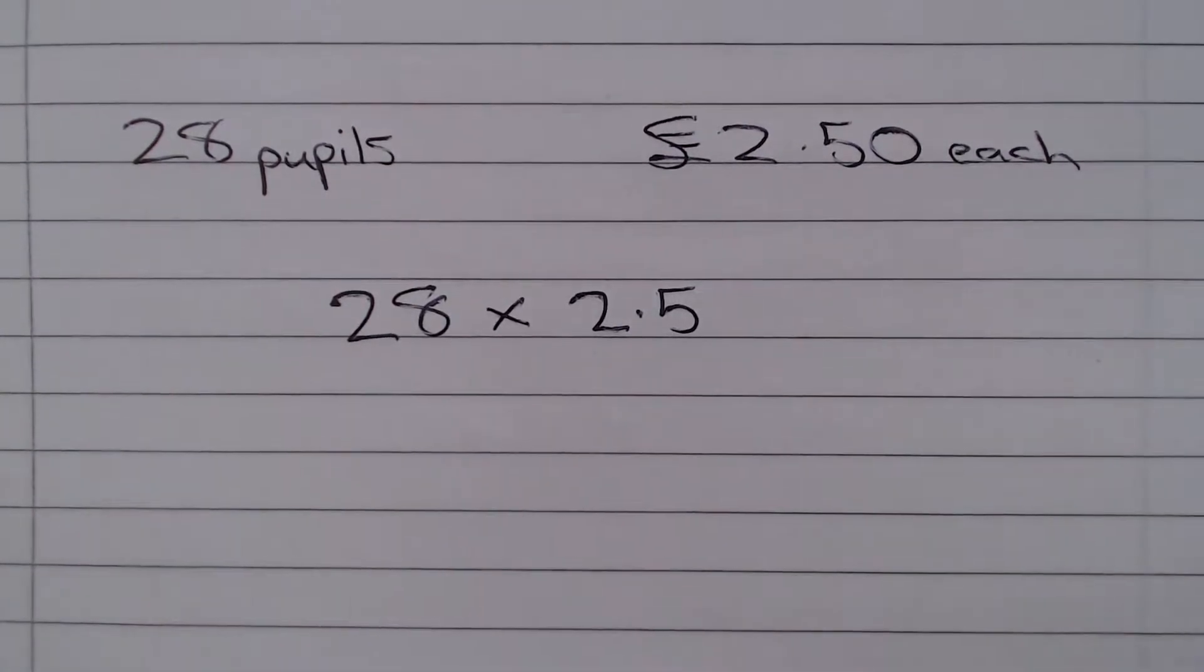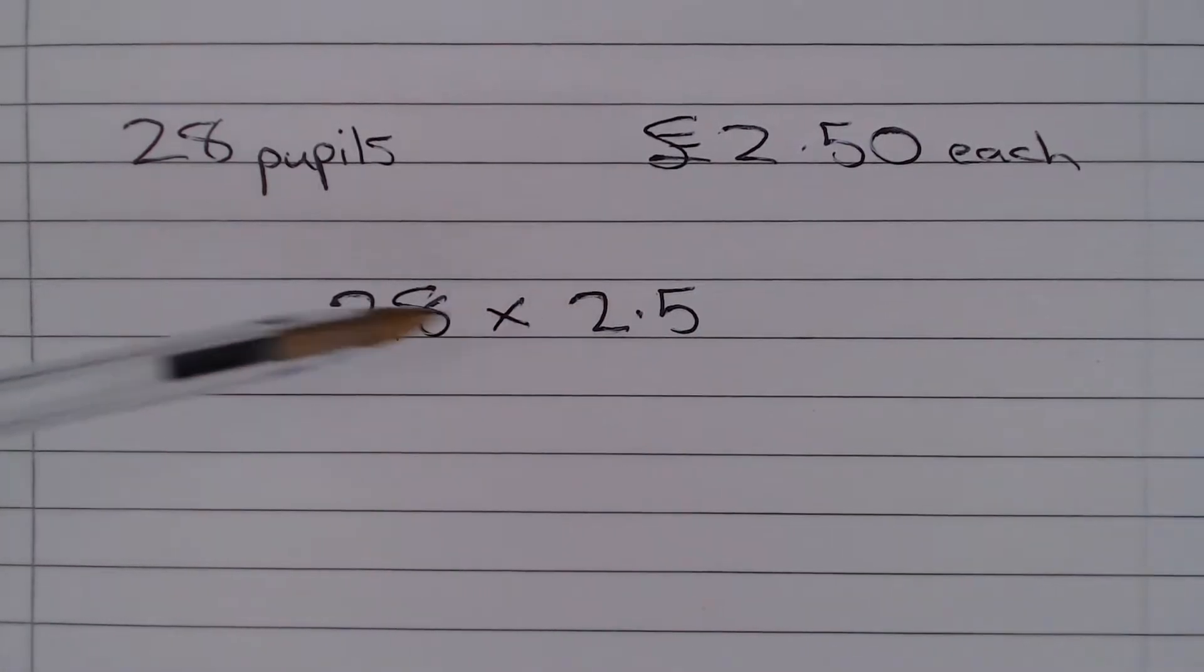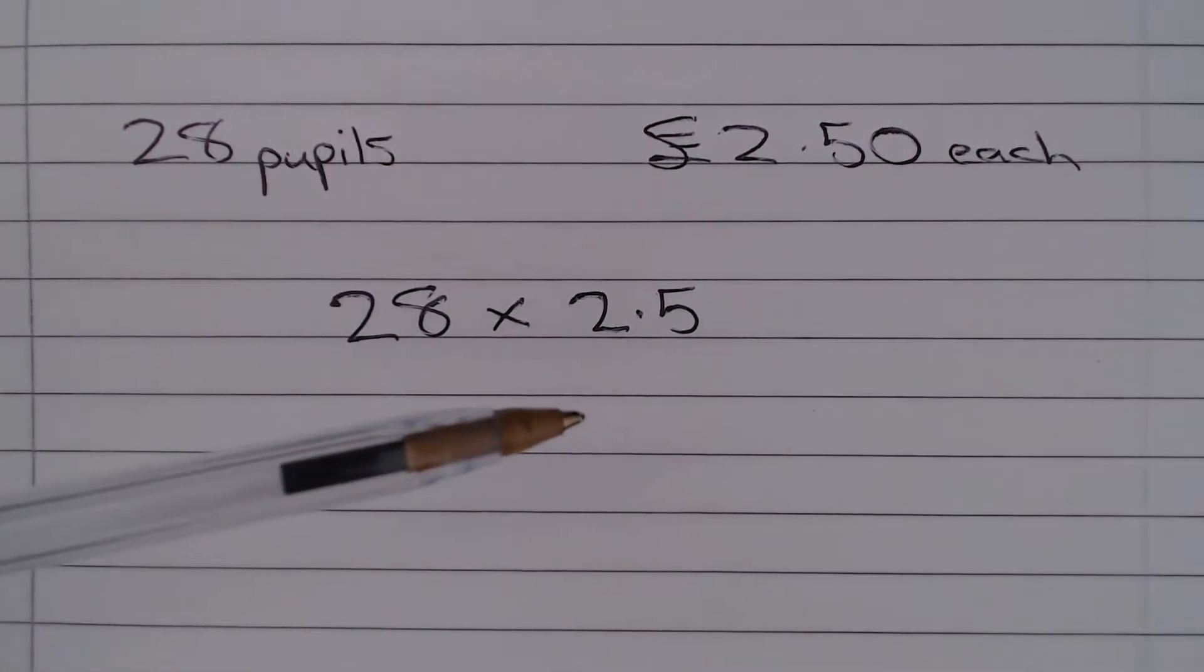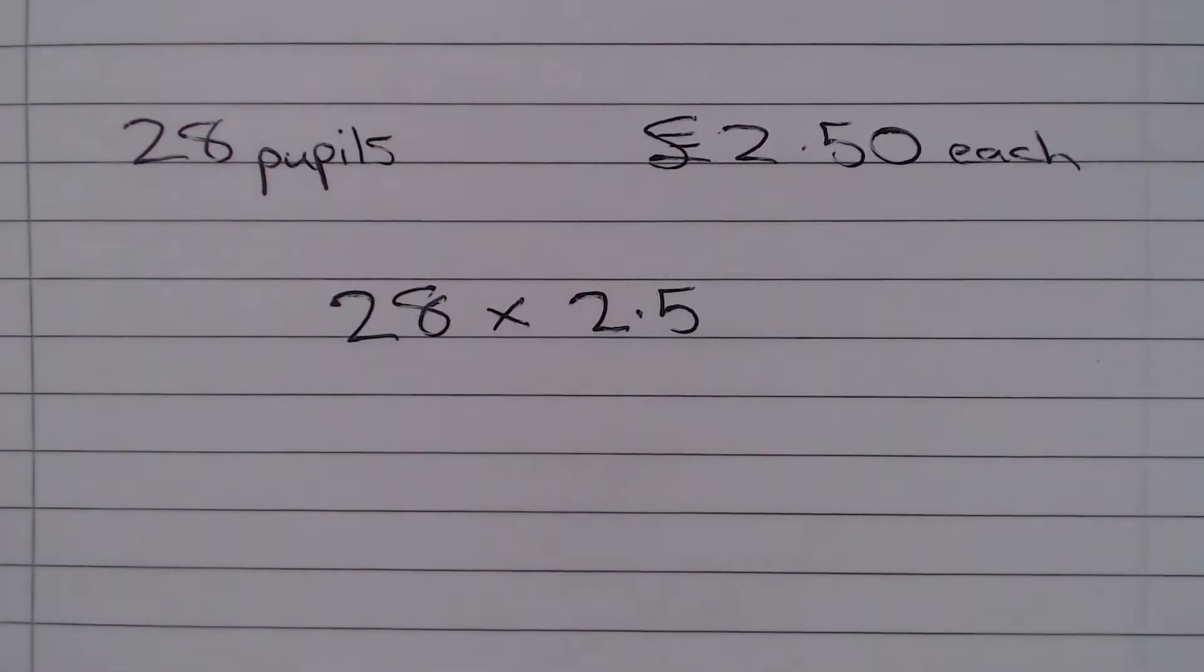Or you could notice this is the trick where you have 25 multiplied by a multiple of 4. Now I know this isn't 25 but it's 2.5, so we've just divided that by 10.